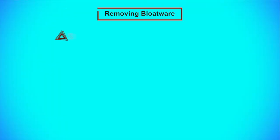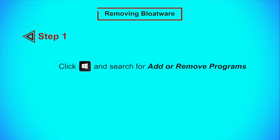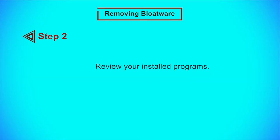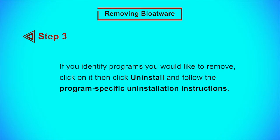To remove bloatware, follow these steps. Step 1: Click on the Start button and search for Add or Remove Programs. Step 2: Review your installed programs. If you have a new computer, this will be simpler. Look for programs you do not recognize, especially programs not made by Microsoft. If you do not recognize a program, try to research it online to understand its functions and reputation. Also beware of software without a publisher name, meaning the software is not signed by a recognized software company. Step 3: If you identify programs you would like to remove, click on them, then click Uninstall and follow the program-specific uninstall instructions.